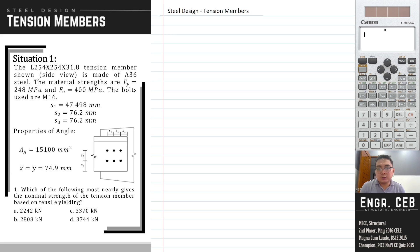The L254 by 254 by 31.8 tension member is made of A36 steel. The material strengths are Fy equals 248 MPa and Fu equals 400 MPa. The bolts used are M16.